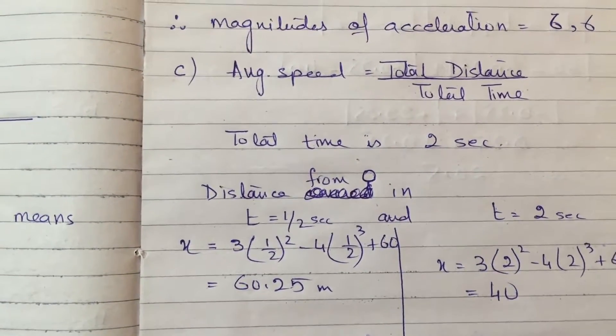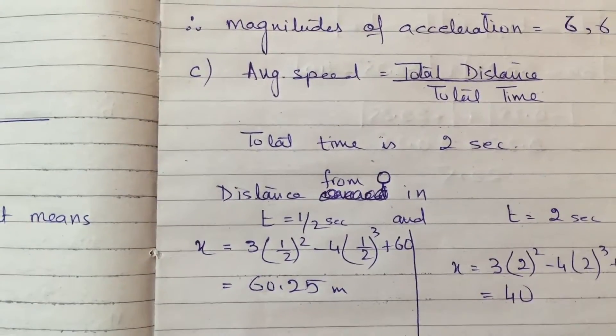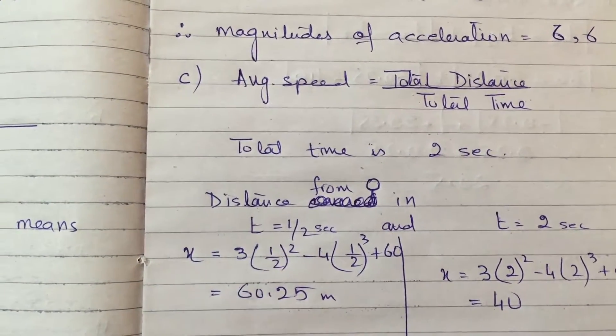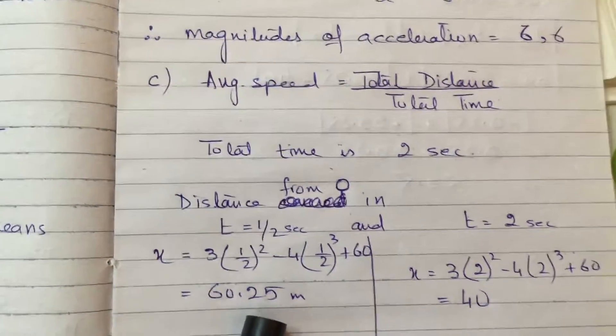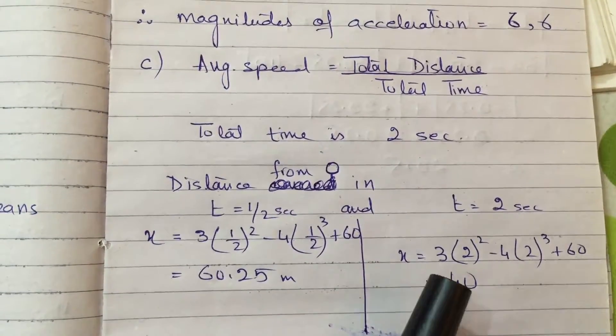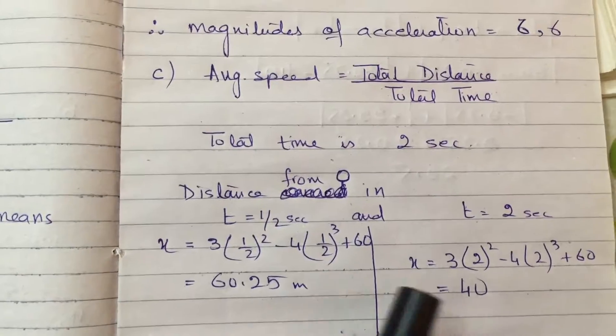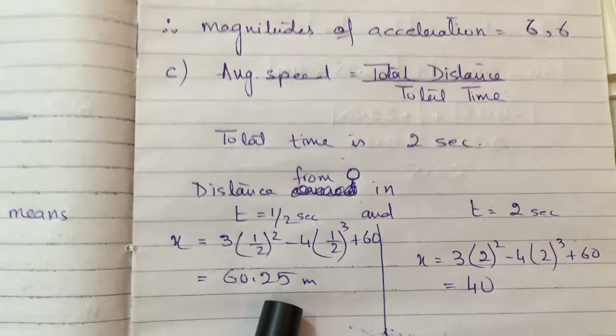Now the displacement equation will give us distance from origin. So when I put t equals 1/2 I got 60.25. When I put t equals 2 I got 40 meters. Now it doesn't mean that the object has covered 40 meters and 60.25 meters. No.